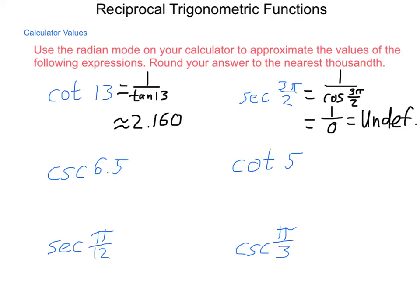Now for cosecant of 6 and a half, this is going to be 1 over the sine of that same value. And 1 divided by the sine of 6.5, rounded to the nearest thousandth, is 4.649.